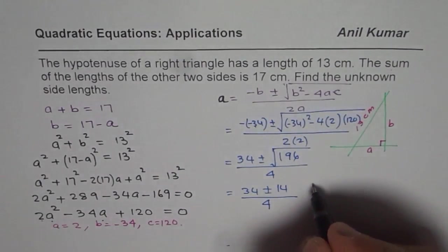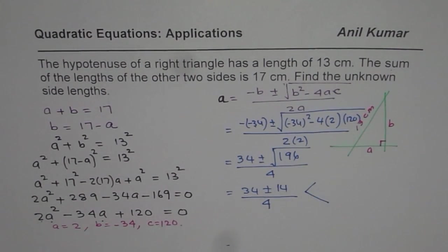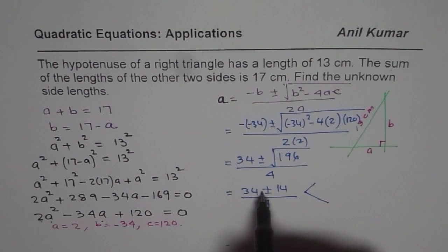Now, that gives us 2 solutions. So every time if we have something positive in the discriminant, we will get 2 results. One of these results is 34 plus 14 divided by 4.